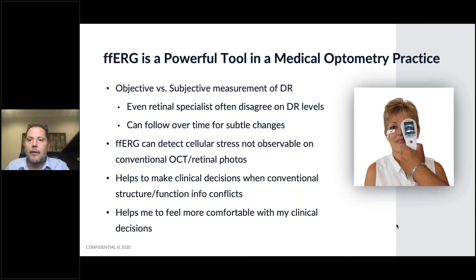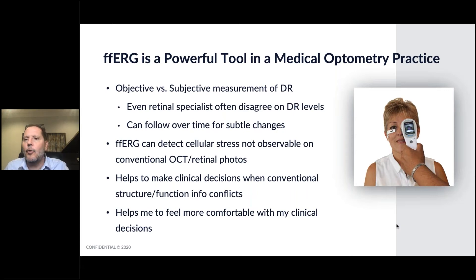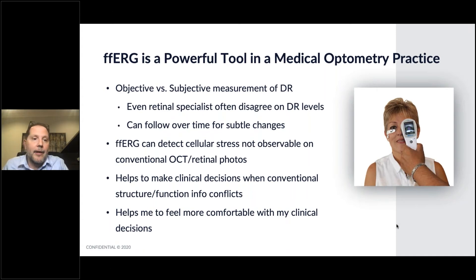It's the same with a visual field — very often you'll see changes in the visual field before you actually see changes in the nerve structure. And you can use those changes to guide your treatment, whether that's an additional medication, better patient education, a better hemoglobin A1C score, or a referral to retinal specialists.